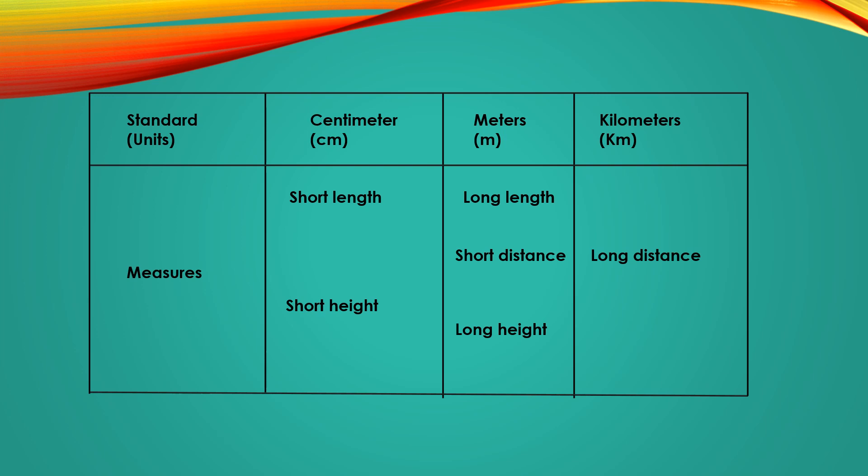Long heights of objects — like the height of a tree or a building. The next standard unit is kilometer, written as km. It is used to measure long distances, like the distance between two cities — we measure that in kilometers. Kilometer is the biggest unit among all these: centimeter, meter, and kilometer.